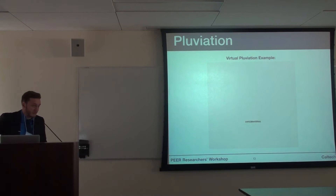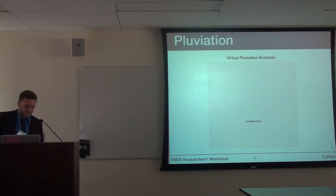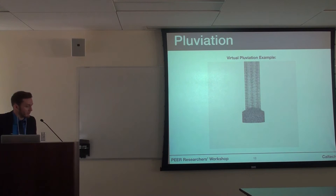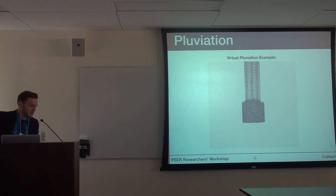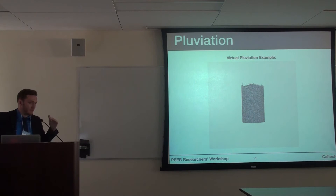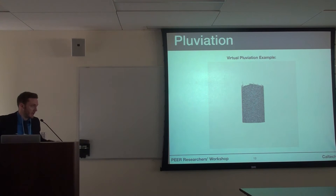Not too many people have seen what a virtual pluviation looks like, so I wanted to show a video example of what we do. Using LSDEM, we just allow grains to enter the specimen and fall using gravity, so it really is a pluviation just like in experiments. This is the cylindrical specimen, but the cubical specimen is done exactly the same way — every so many time steps you enter a new set of grains, let them fall, and then once they've all fallen you remove some grains from the top to flatten out the specimen before applying your confining pressures.